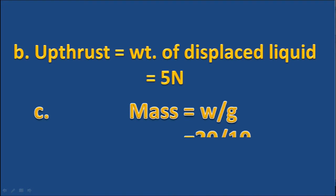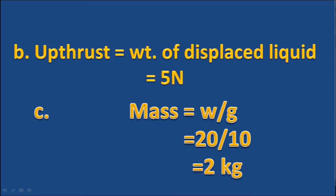For C: mass equals weight divided by acceleration due to gravity. Weight in air is 20N and acceleration due to gravity is 10 m/s². Therefore, the mass of the object is 2 kg.